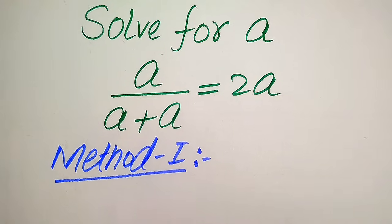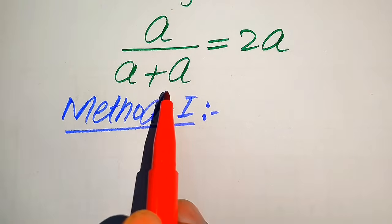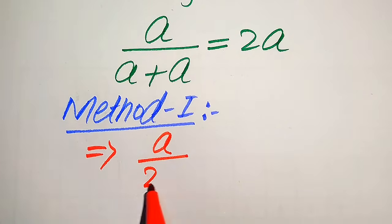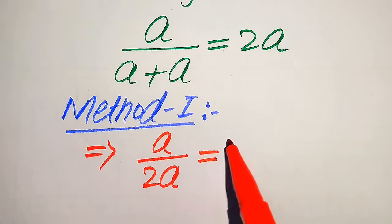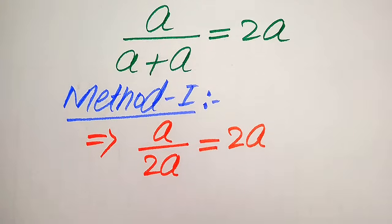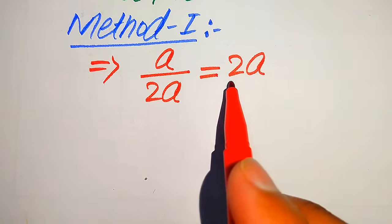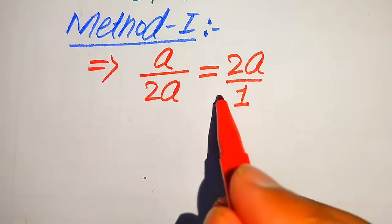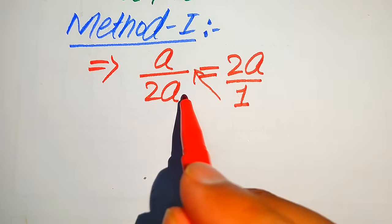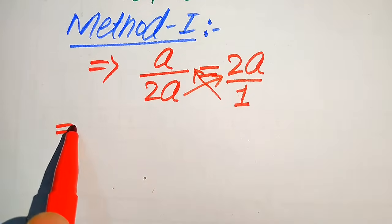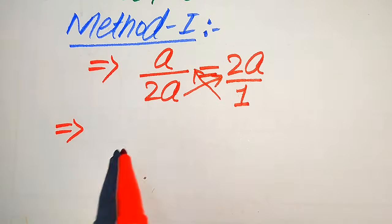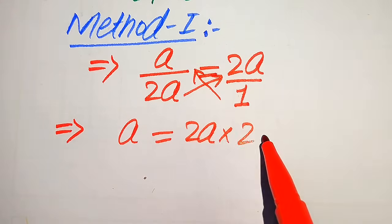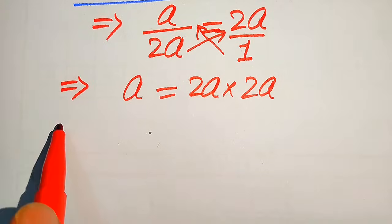In the first method, in the denominator of the left-hand side we have a plus a. When we add a plus a it becomes two times a. So on the right-hand side we have 2a, meaning the denominator is one. We cross multiply: one times a equals a, and 2a multiplied by a is written as 2a times a.